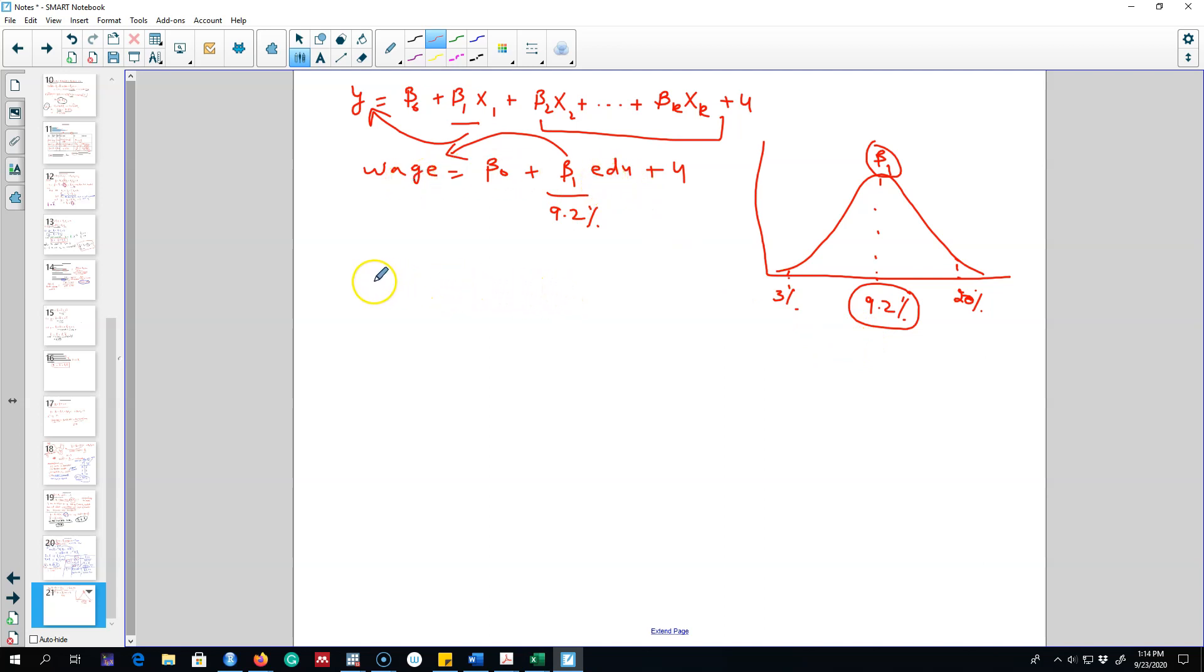There is one more statistic that we need to care about when dealing with these beta parameters, and that is the variance of beta parameters. So we may be interested in knowing the measure of central tendency - that is the average effect of this beta which is 9.2 percent - but we may be also interested in knowing on average what is the distance between these two points to the average point.